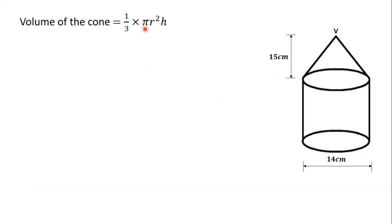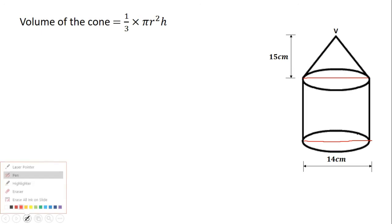The formula for the volume of a cone is (1/3) × pi r squared h. The question states the cone fits directly onto the cylinder, meaning the diameter of the cone is the same as the diameter of the cylinder, which is 14 centimeters.